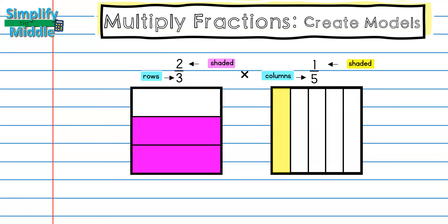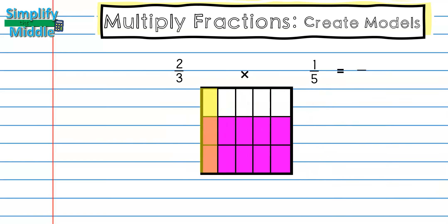In order to create a multiplication problem, I'm simply going to put both of these together. So here I see I have one out of five columns shaded and now I'm going to put my models together. When I stack them like this I can see the product. I'm going to first look at what has both shadings, so I only have these two right here with both shadings.